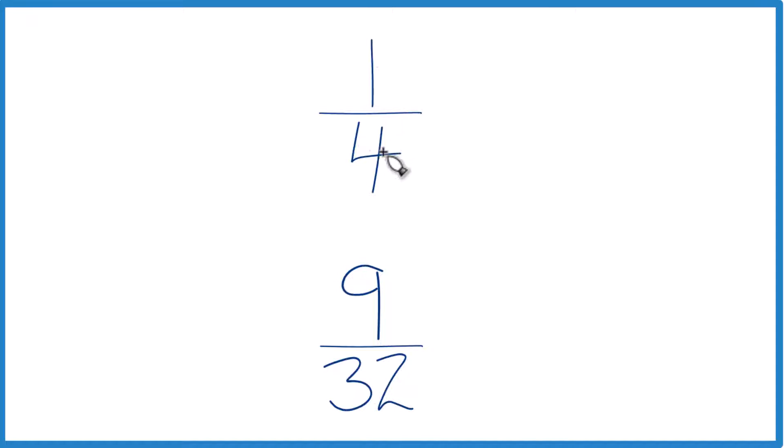So first off, you could just divide 1 by 4 in a calculator, get a decimal, divide 9 by 32, get a decimal, and then compare, see which fraction is greater, 1 fourth or 9 30 seconds.